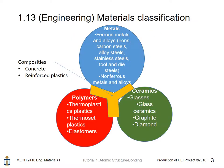In engineering, we classify all materials into the following four categories. Metals consist of all metals such as ferrous metals, iron, carbon steels, and some alloys such as brass. Ceramics include glasses, graphite, and diamonds. Polymers include some plastics such as thermoplastics and thermosets.